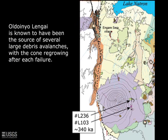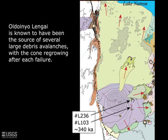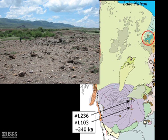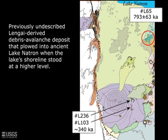Ol Doinyo Lengai has been the source of several large debris avalanches, with the cone regrowing after each failure. Thus, evidence for the early history of the volcano lies in part in the debris avalanche deposits shed onto the adjacent terrain. Finding materials suitably fresh for dating in these deposits has proven difficult. Our mapping discovered a previously undescribed Lengai-derived debris avalanche deposit that plowed into ancient Lake Natron when the lake's shoreline stood at a substantially higher level. We found phlogopite within a large block, something that probably came from an ancestral tuff ring either on the volcano or swept up by the debris avalanche. The age — 793,000 years — is the maximum age of the debris avalanche, which itself must be younger than any of the fragments within it.